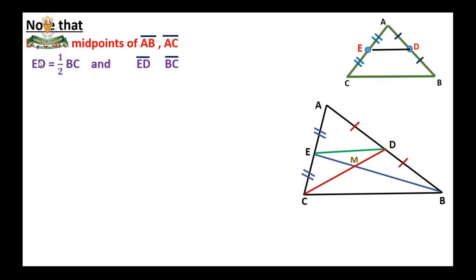Note that D and E are midpoints of AB and AC respectively. Since D is the midpoint of AB and E is the midpoint of AC, the length of ED equals half the length of BC, and ED is parallel to BC. This is a very important note.